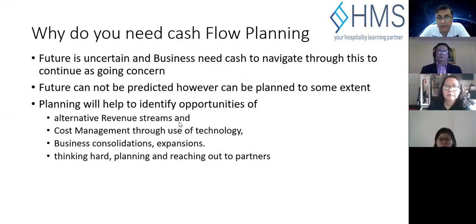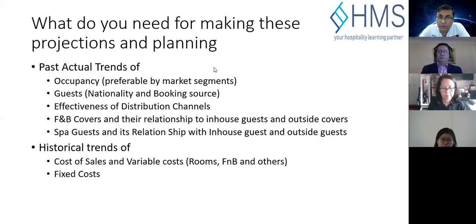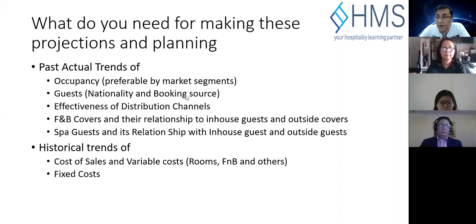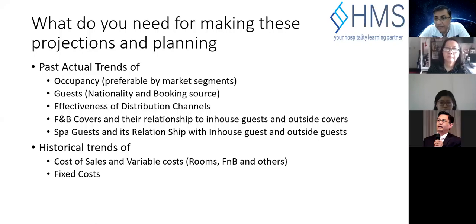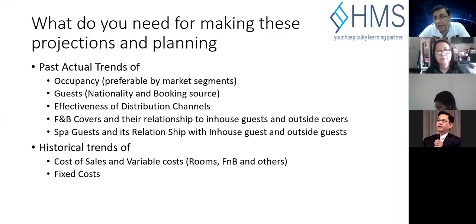We'll discuss the fundamentals of how to do that, and I will share an Excel template you can use to run your own cash flows. The first thing you need when making a cash flow in normal situations is to understand past actual trends. You need to understand more than just your occupancy — you need to understand where your occupancy is coming from, preferably by market segment: how much business is coming from your website, OTAs, travel agents, corporate customers, groups, and individuals, as well as the nationality of your guests.